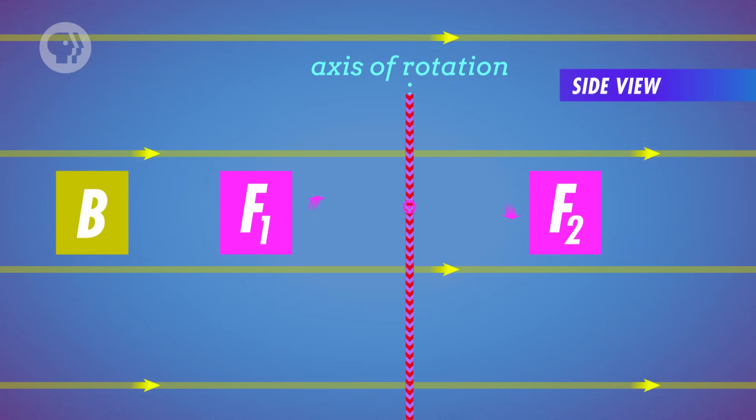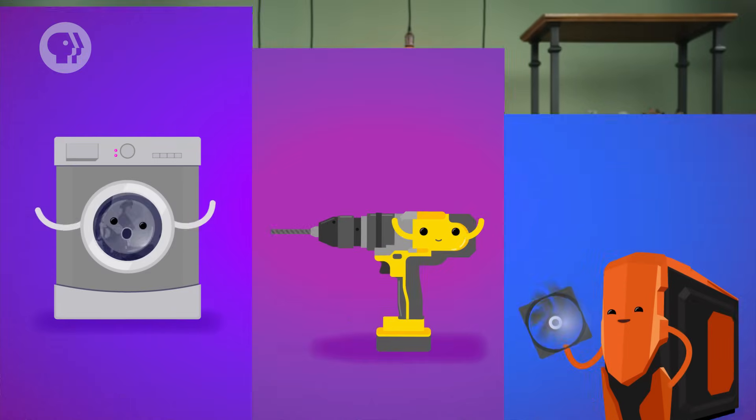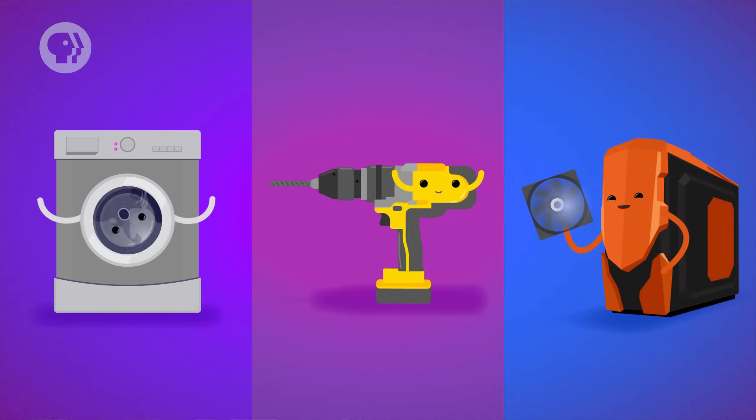So the coil turns clockwise. This is how electric motors work. They have an electric current that continuously flips directions, making loops of wire spin. Those moving loops of wire can be used to do mechanical work, like turning the drum on your washing machine, or your power drill, or the fan that probably cools your computer.